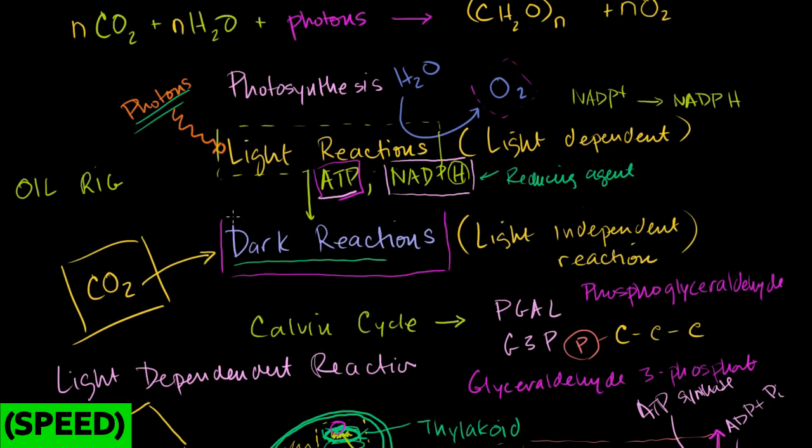And I want to highlight again, even though it's called the dark reactions, it doesn't mean that it happens at night. It actually happens at the same time as the light reactions. It occurs while the sun is out. The reason why they call it the dark reactions is that they're light independent, they don't require photons. They only require ATP, NADPH, and carbon dioxide.